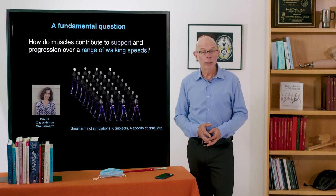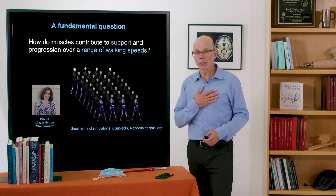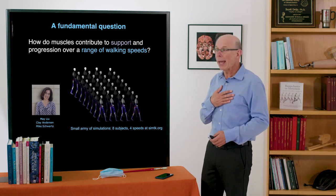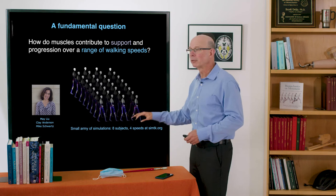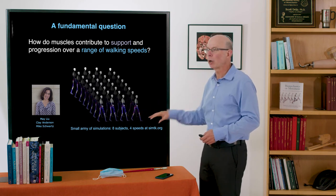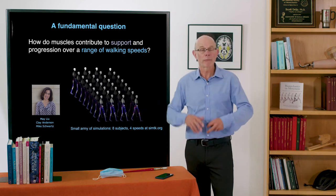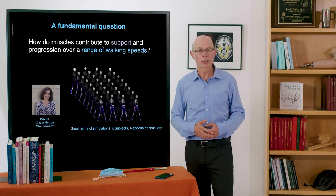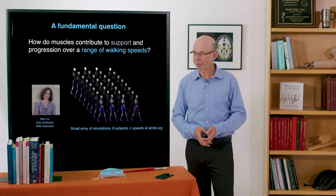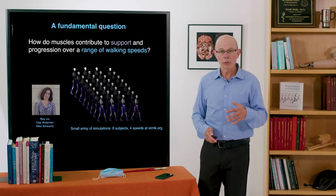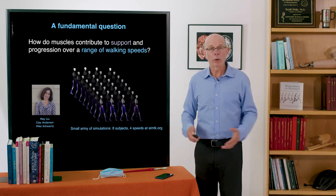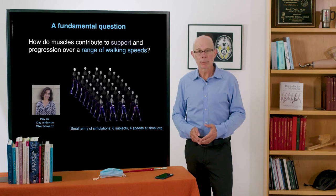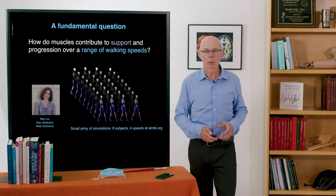To do that, Mei Liu who's a doctoral student in the lab at the time developed what seemed like a small army of simulations. We had eight subjects walking at four different speeds. All of that data is available in the simtk.org website so you're welcome to that. Mei and her collaborators analyzed those simulations to gain insight into this question.